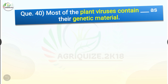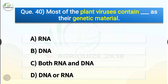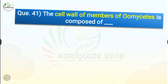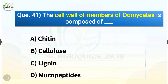Question number forty: Most of the plant viruses contain dash as their genetic material. The options are RNA, DNA, both RNA and DNA, or DNA or RNA. The correct answer is option A, RNA. Most of the plant viruses contain RNA as their genetic material.